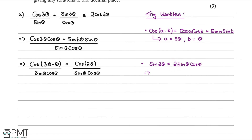To match our denominator we need to get rid of the 2, which we do by dividing both sides by 2. So the trig identity we'll use is: ½sin(2θ) = sinθ cosθ. We can then replace sinθ cosθ with ½sin(2θ), giving cos(2θ) divided by ½sin(2θ).